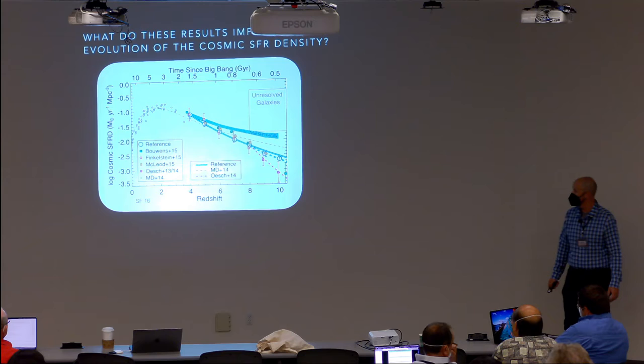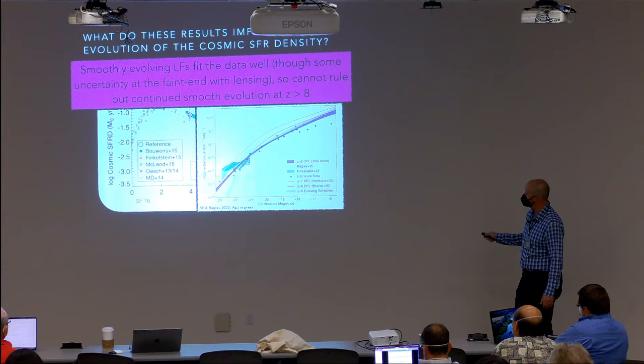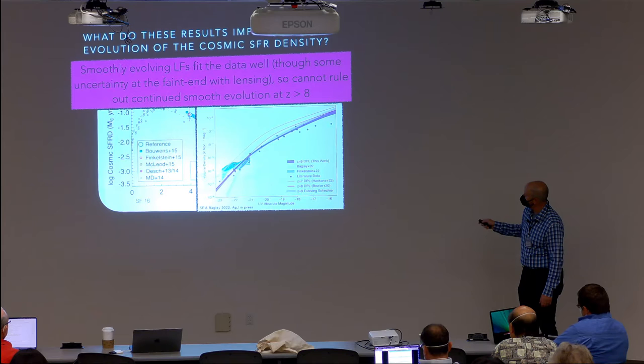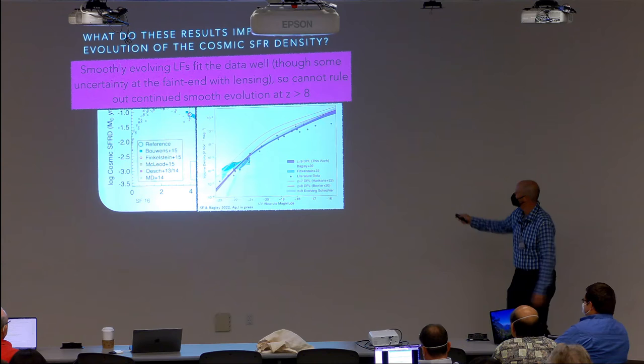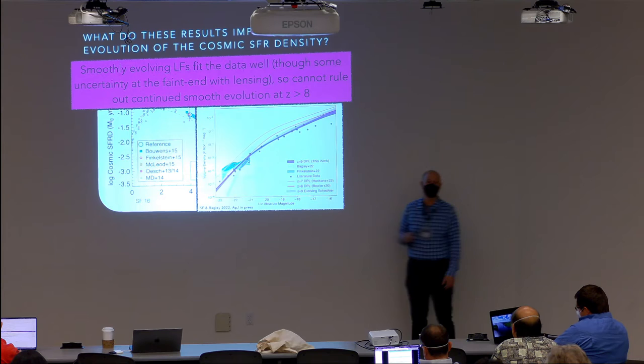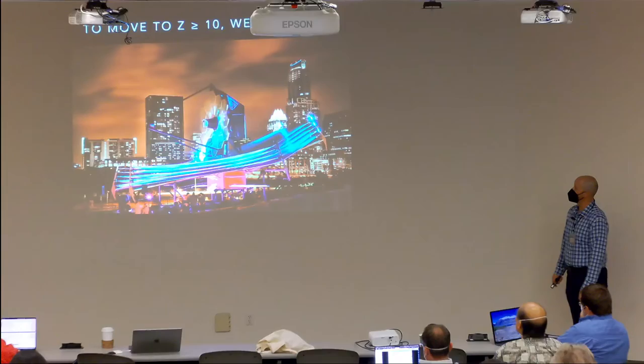Returning to the cosmic star formation rate density: at redshift 9, a double power law assuming smooth (1+z) evolution — a non-accelerated decline scenario — matches the data pretty well. Even with HST there's no reason to think you can't have a smoothly declining star formation rate density. This bodes well for what we might expect to see with JWST.